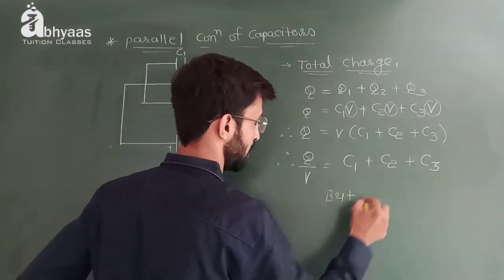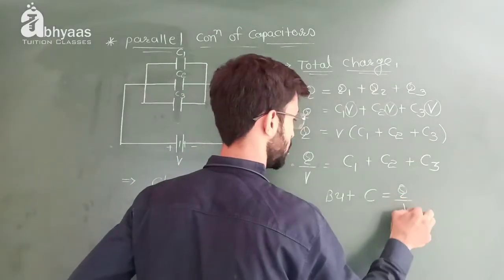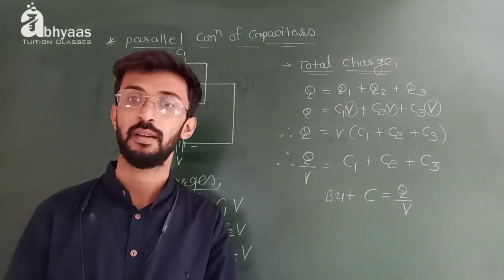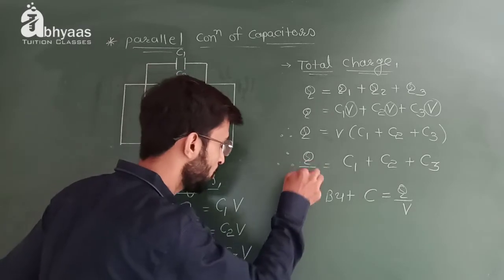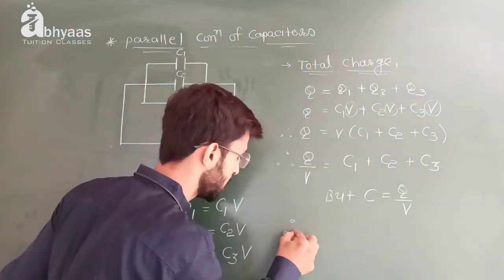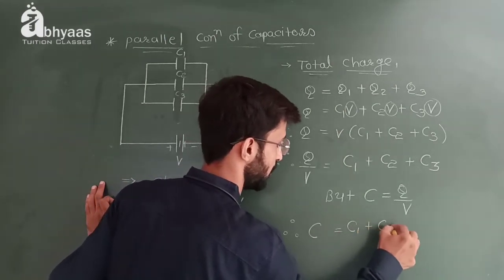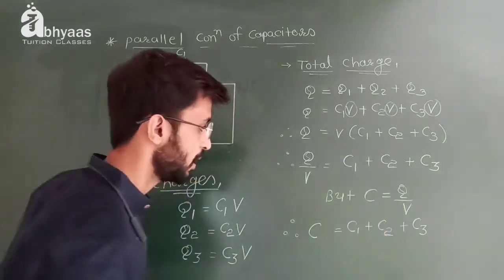But as you know, the capacitance C is equal to Q by V. The formula for capacitor C is Q divided by V. So Q divided by V is equal to C1 plus C2 plus C3. Clear?